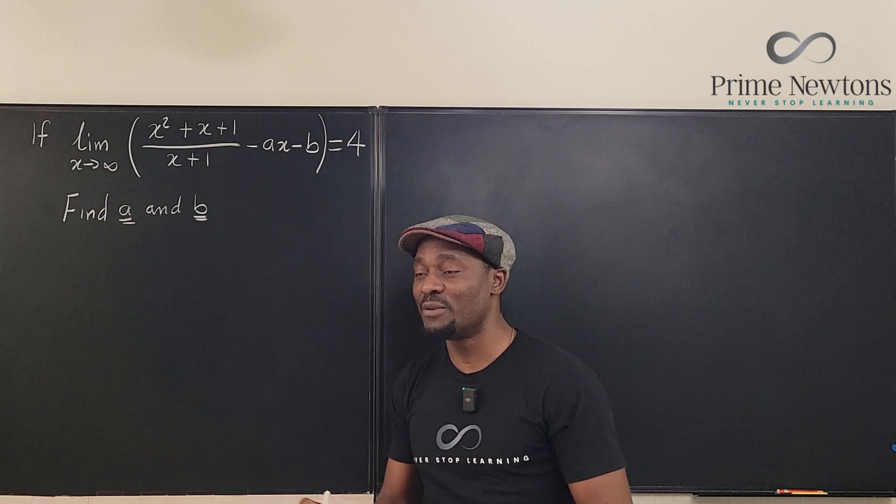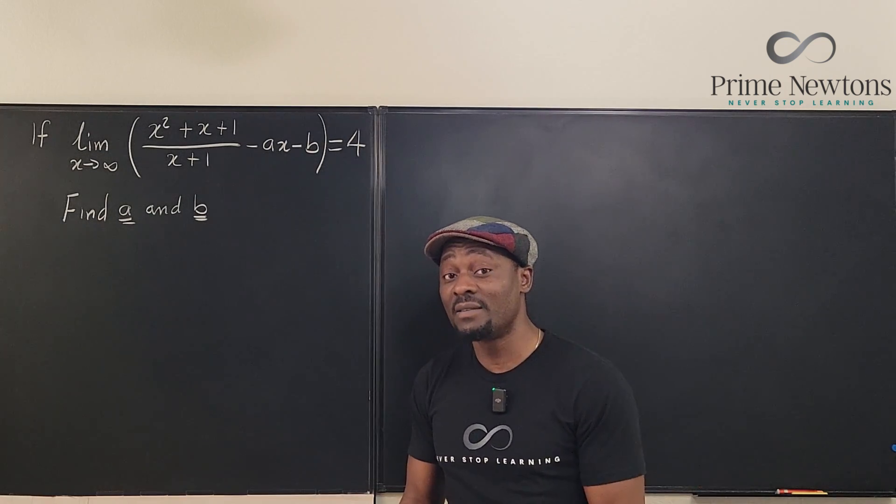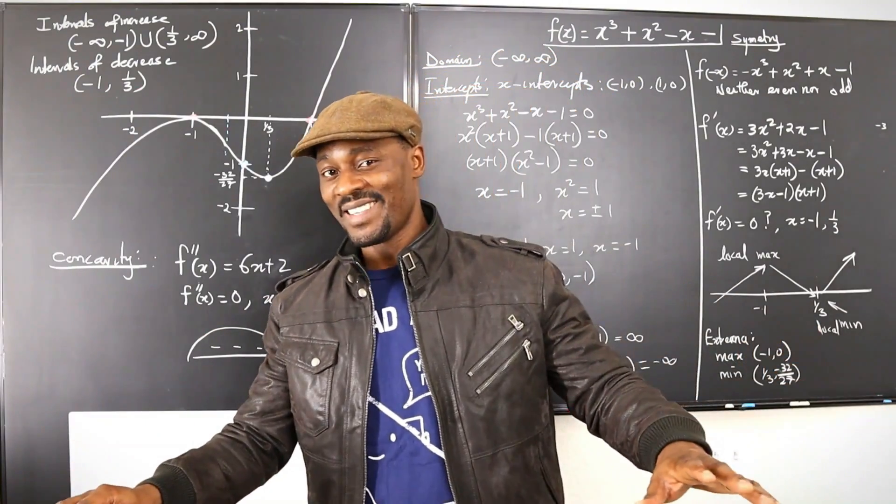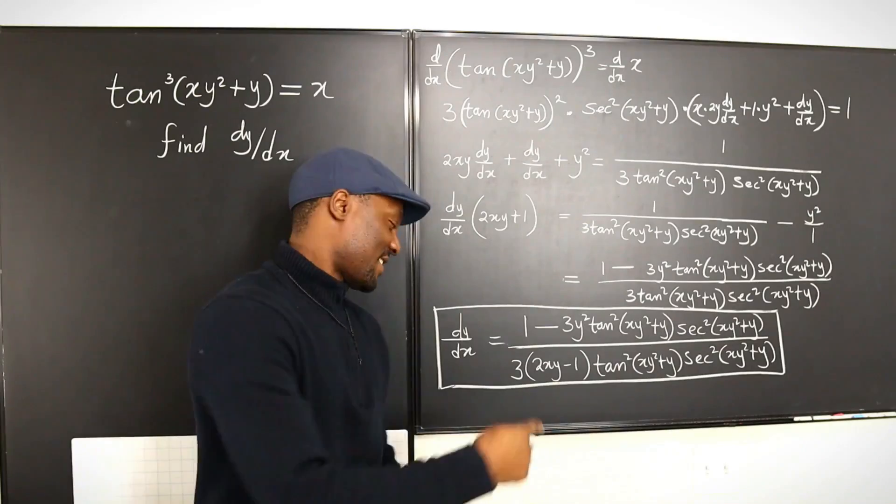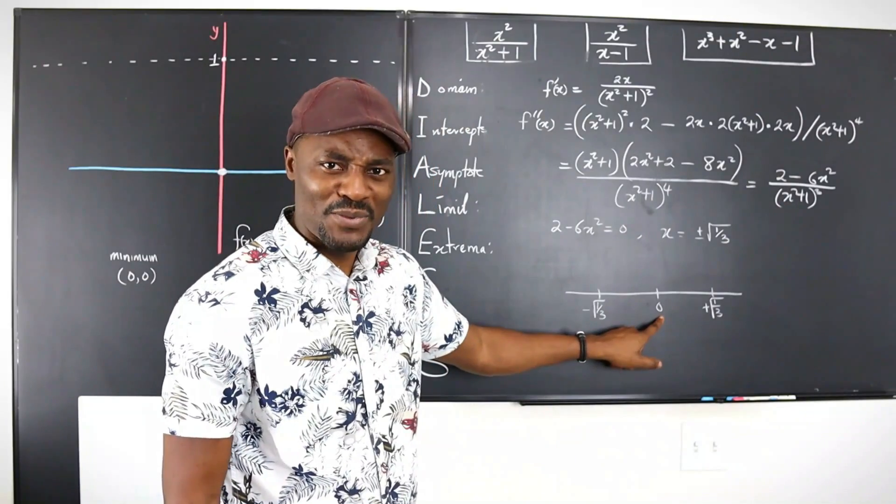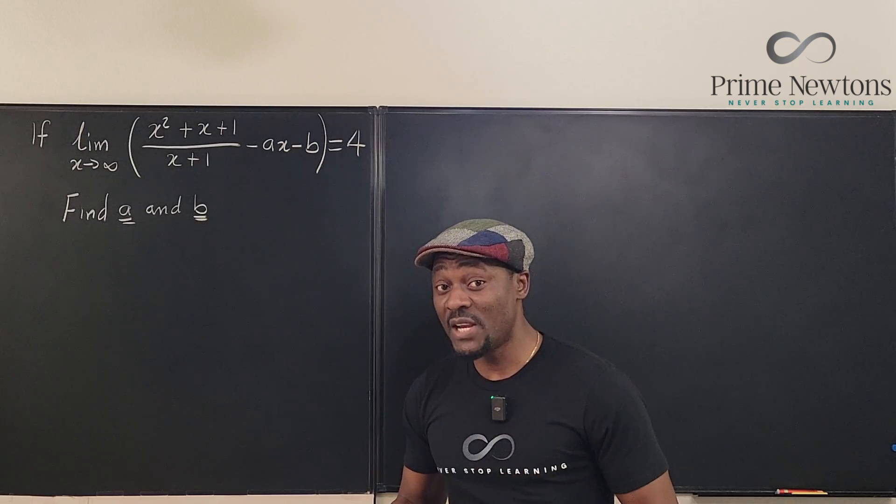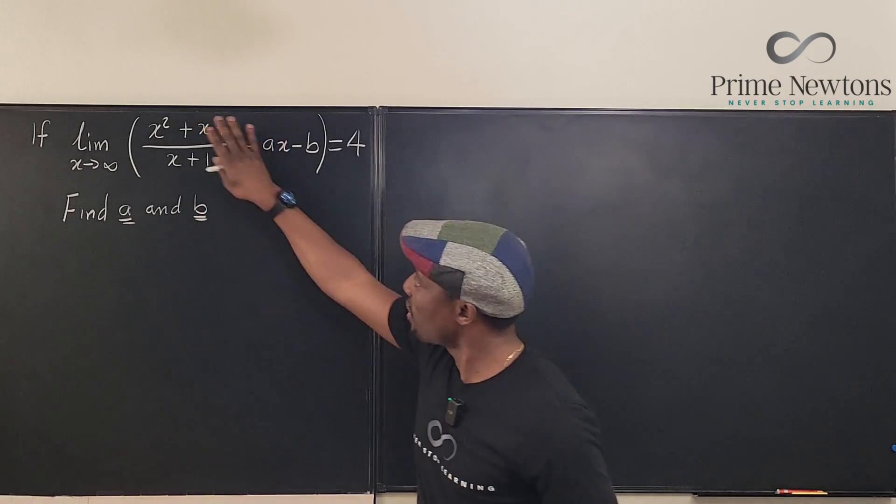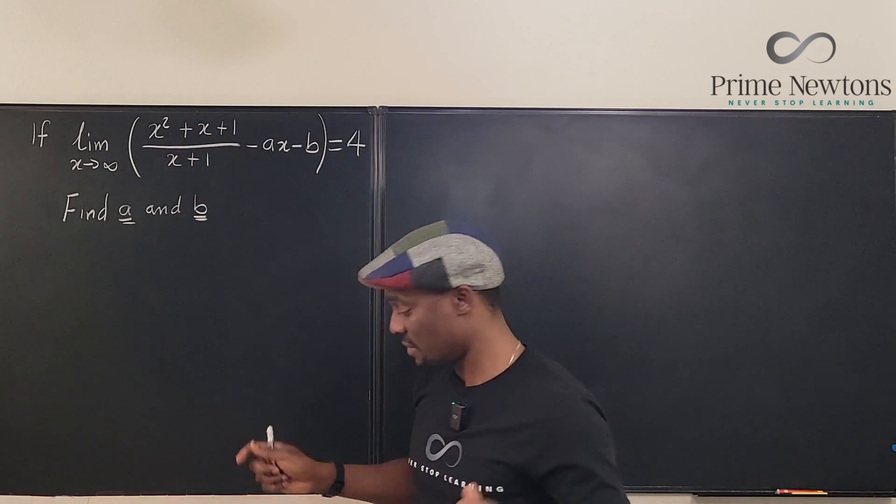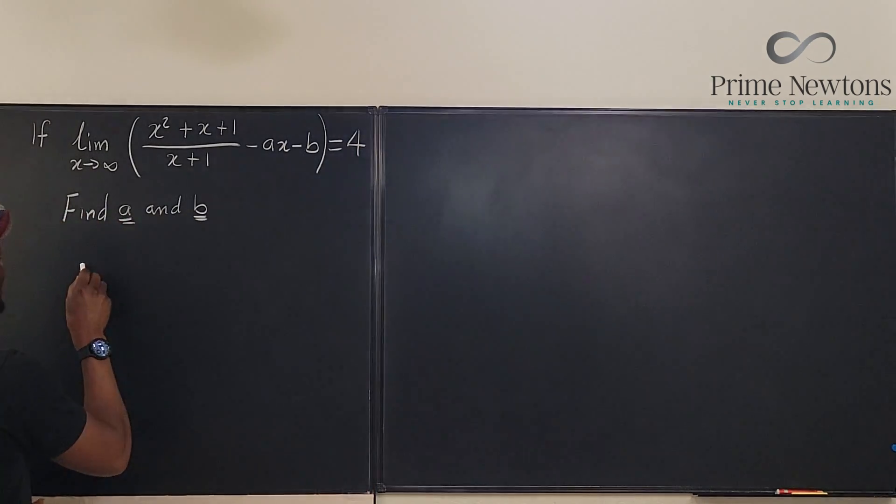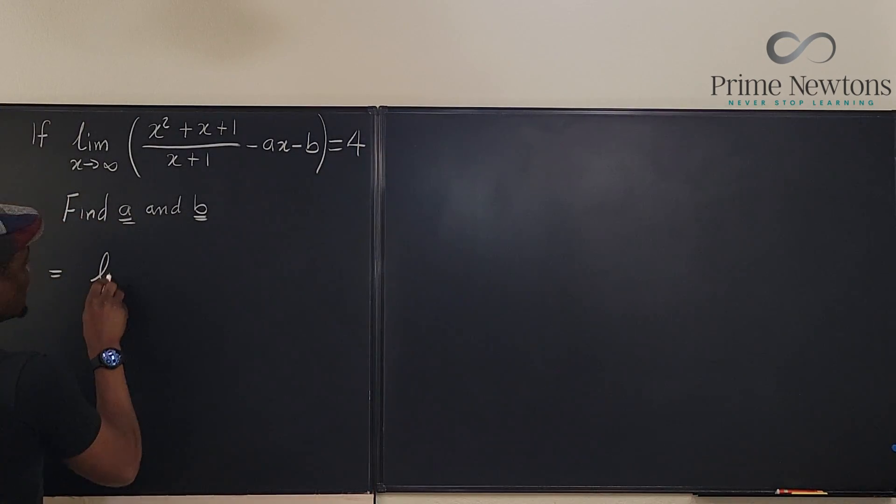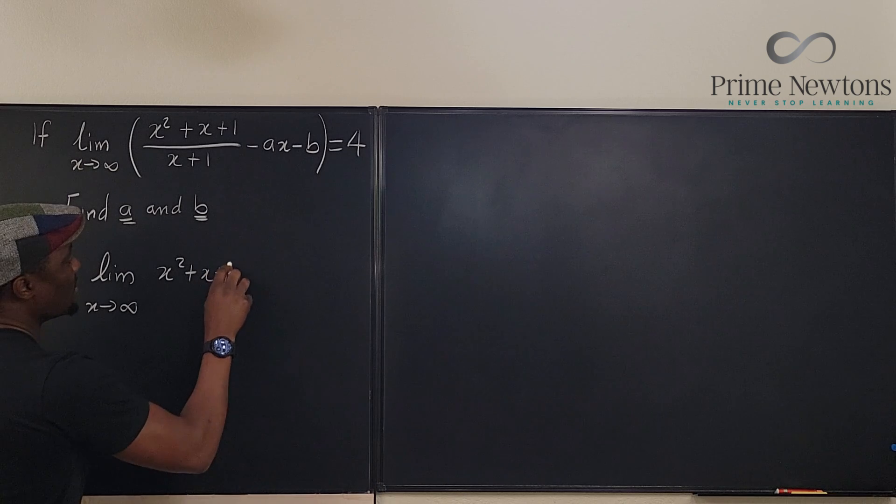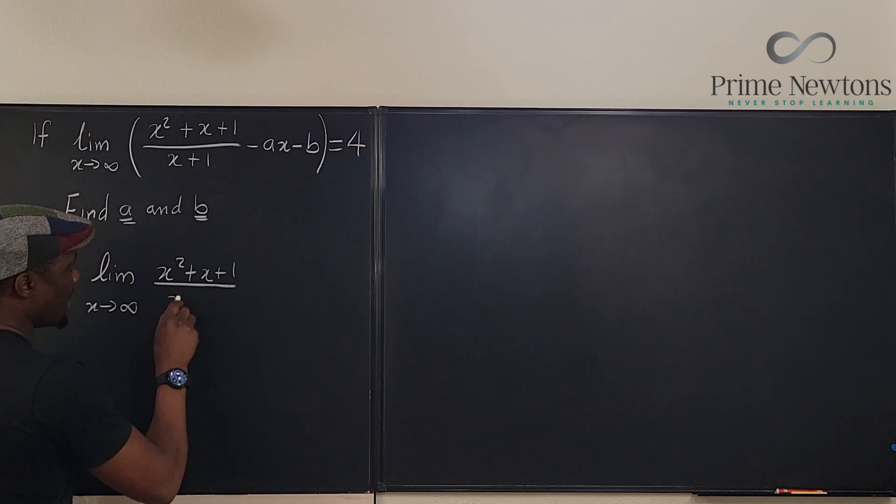The only way I know to take a limit as x goes to infinity is to have a single rational function. So what I'm going to do is put all of these together into one single expression. This is the same thing as the limit as x goes to infinity of (x squared plus x plus 1) over (x plus 1).